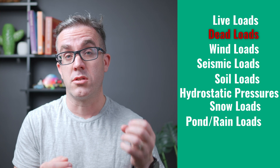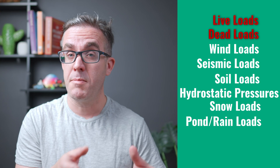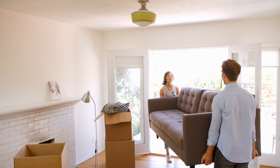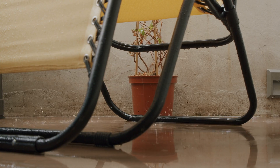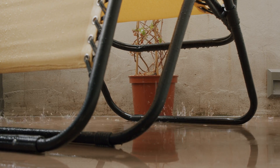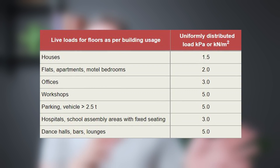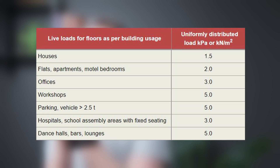Live loads are more dynamic forces — people coming in and out of the building, furniture you bring in, movable aspects of the structure, and even the ponding of water. If a balcony sags, water will pond on top. Because live loads are quite dynamic, we have a bigger range of where those loads can be. Studies have been undertaken to work out how much that load should be, and we apply a bell curve, going to the upper end to make sure we never underestimate those loads.